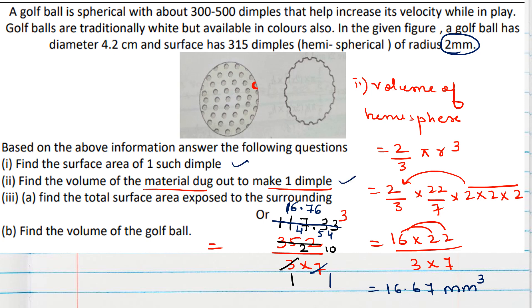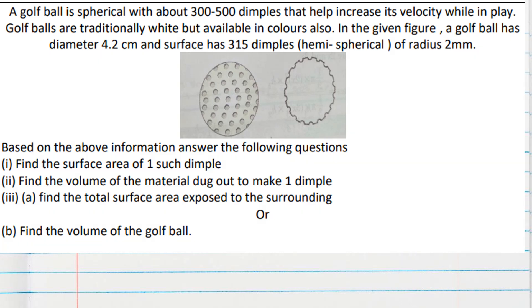Because here it is not asked, you write your answer in centimeter or millimeter. Now for question number 3, find the total surface area exposed to the surrounding. See for this, clear picture is given in the second diagram. Exposed to the surrounding means this area we should find actually. Your golf ball after carving the 315 dimples or hemispheres will look like this. This is the area which will be exposed to the surrounding.